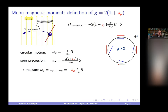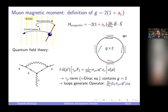Experimentally: you put the muon in the storage ring in a homogeneous magnetic field and it orbits. If g were exactly two, the spin would always remain aligned with the velocity. But if g is bigger than two, the spin precesses faster and you get interference between the two frequencies — that is what is directly measured. In quantum field theory this is described via Feynman diagrams for the muon–photon three-point function.